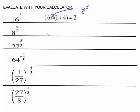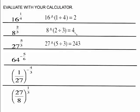So 8 to the 2/3 will be 8 caret (2 divided by 3), which gives you 4. And 27 to the 5/3 will be 27 caret (5 divided by 3), which equals 243. Be sure you are putting that fractional exponent in parentheses, or the calculator will not compute it correctly.